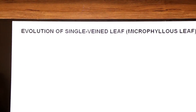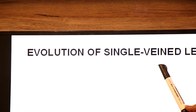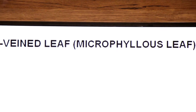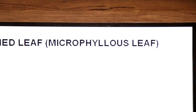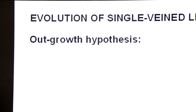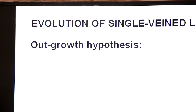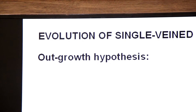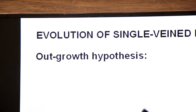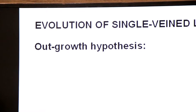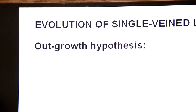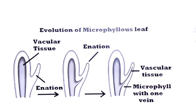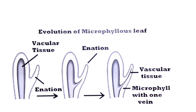Now we are discussing the evolution of single-vein leaves, also called microphyllous leaves. There is a hypothesis proposed for this: the outgrowth hypothesis, also called the enation theory. This is illustrated in the diagram showing the outgrowth hypothesis.